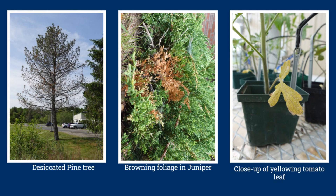The first step is determining where and what the symptoms are on the plant. Symptoms may include yellowing or browning leaves, wilting, a wound, or even stunted growth.